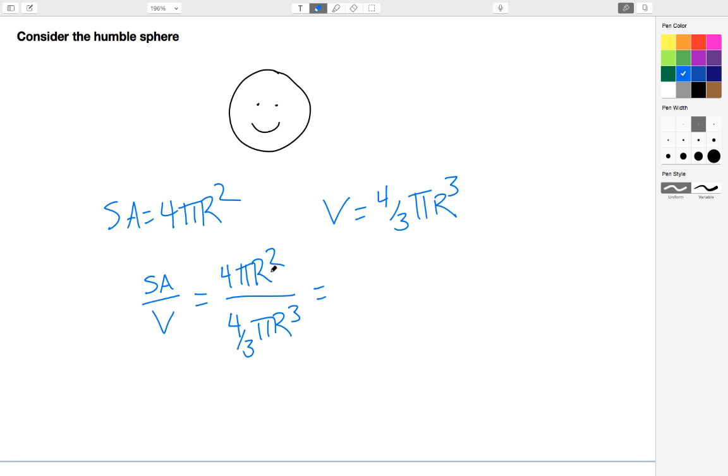and cancel out terms and so forth, I get a final answer of 3/r as my ratio. So the main point is that as r decreases, in other words as the radius of my sphere decreases, the surface area to volume ratio increases.